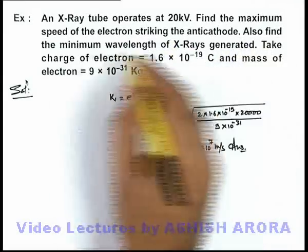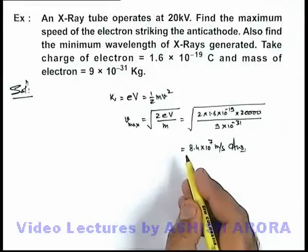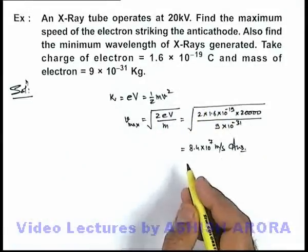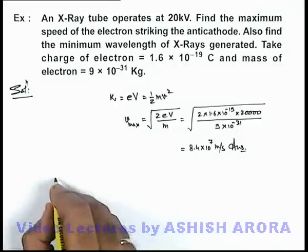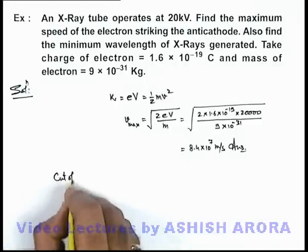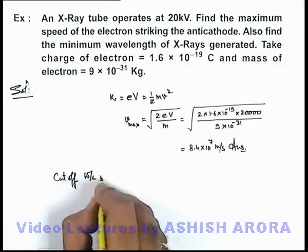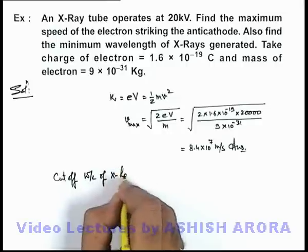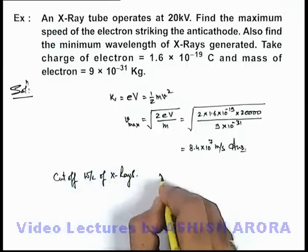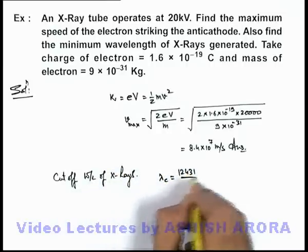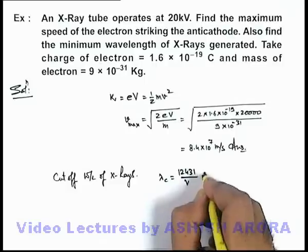We are also required to find the minimum wavelength of X-rays generated, which is the cutoff wavelength for continuous X-rays. The cutoff wavelength can be given as λc = 12431/V in angstroms.